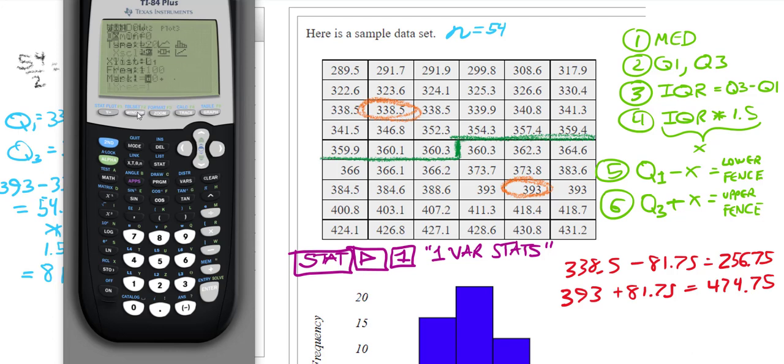Now, the last thing we need to do is we need to clean up our window. Our window needs to go from 289.5 to 431.2. So our x-minimum, let's put that at maybe 275, and our x-maximum should be 450. Going by 25 would be acceptable. Our y-minimum and y-maximum isn't really that important, but let's go from 0 to 5 by 1's just so we can see it up on the screen.